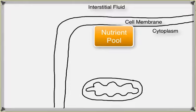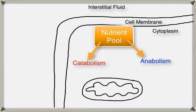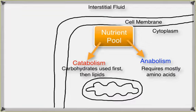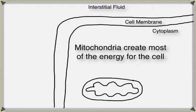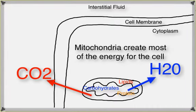The nutrient pool is the source of substrates for both anabolism and catabolism. Anabolic activities such as creating new membrane components, organelles, and enzymes require more amino acids than lipids, and very few carbohydrates. With catabolism, if nutrients are readily available, carbohydrates are broken down first, then lipids, and amino acids are seldom broken down if other energy sources are available. The mitochondria create most of the ATP for the cell, absorbing specific molecules from the breakdown of carbohydrates, lipids, and proteins, and breaking these fragments further to generate carbon dioxide, water, and ATP.